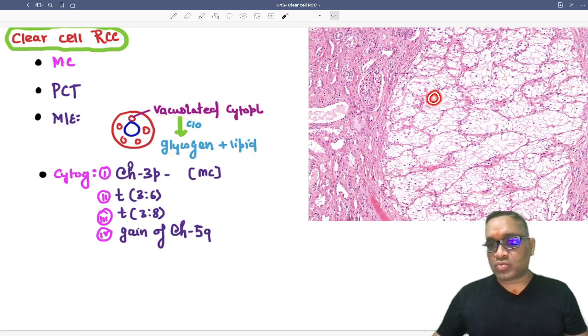So now you can see these are the tumor cells, all are showing you clear cytoplasm because of lipid and glycogen both are present.